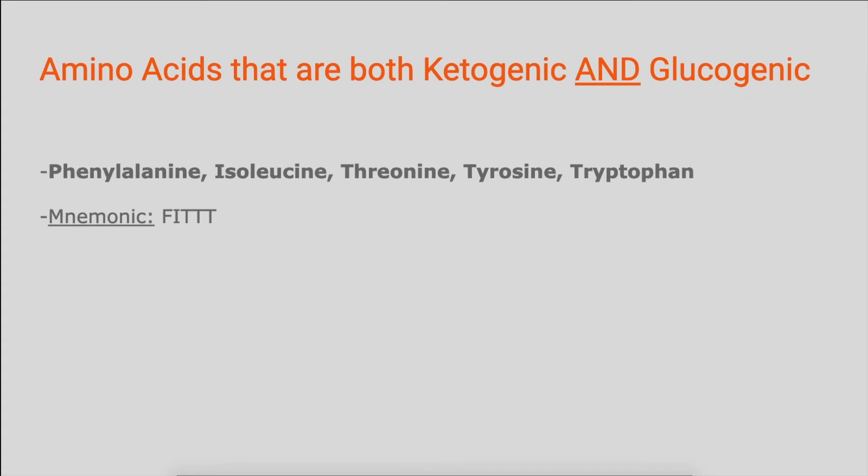Moving on to the amino acids that are both ketogenic and glucogenic, we have phenylalanine, isoleucine, threonine, tyrosine, and tryptophan.